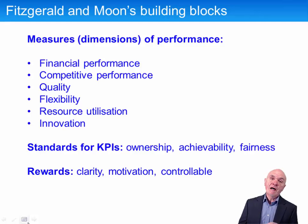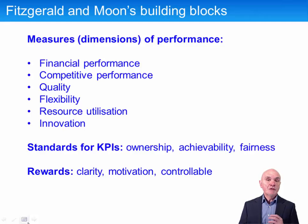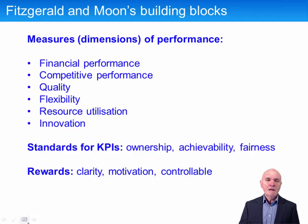KPIs have to be seen as achievable, because if they're seen as too difficult, people give up — they say no matter how hard I work, I'm not going to get this, so I may as well not try at all. And finally, fairness. If there was some problem with supplies and you couldn't produce the goods you wanted to, you would expect some allowance, particularly when judging performance-related bonuses. You'd have to acknowledge that under the circumstances, they tried really well.